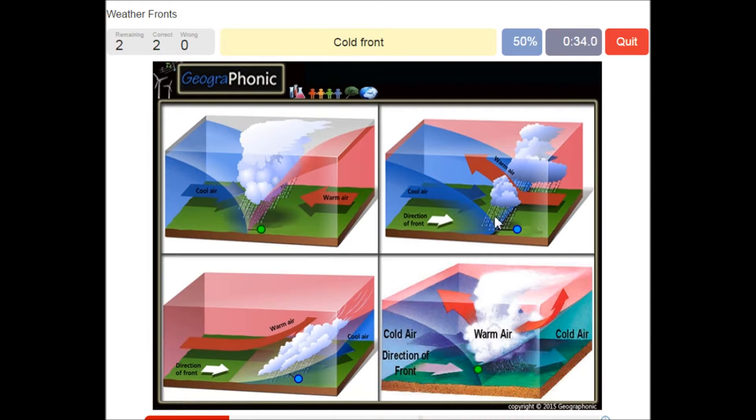This is a cold front. The cooler air is coming in pretty fast and it pushes the warm air pretty fast to rise and it causes a lot of nimbus stratus clouds.